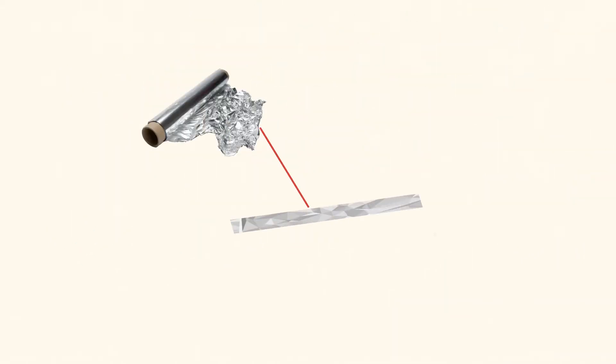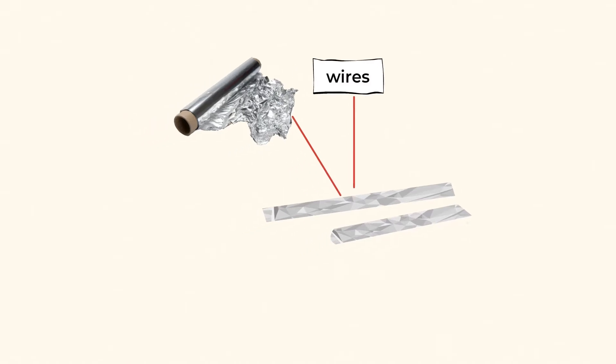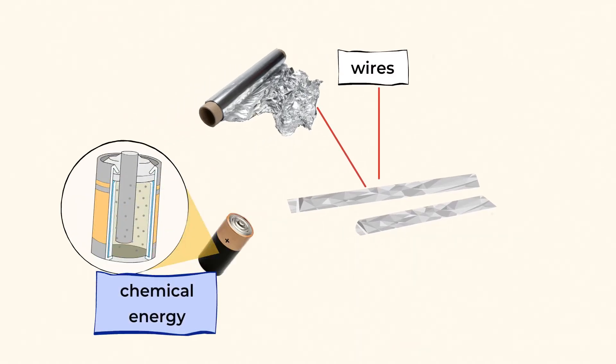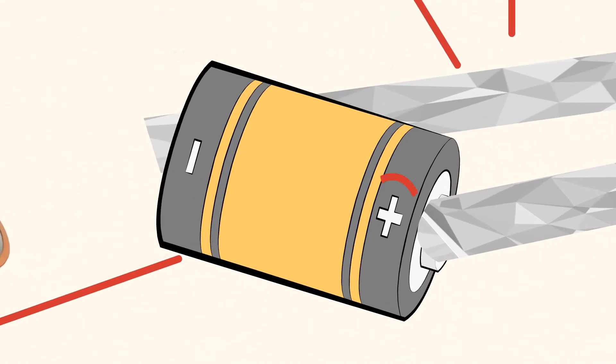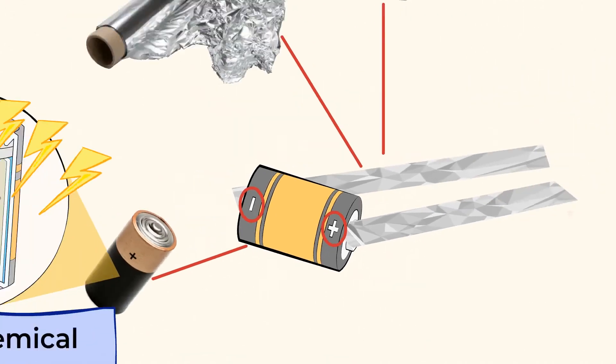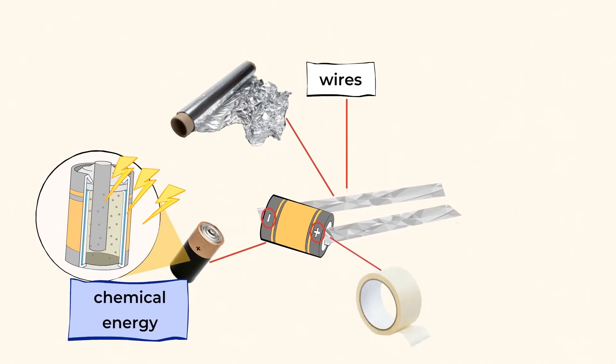Now, cut two strips of aluminum foil, which will act as the wires in your circuit. Now, a battery has chemical energy stored inside of it, and this energy will be converted into electrical energy. Now, take a close look at the battery. It has a positively charged end and a negatively charged end. These are shown with a positive and a negative symbol. Tape one strip of foil to the negative end of the battery, and the other strip to the positive end.